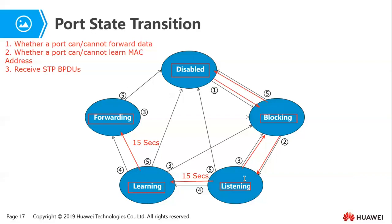The purpose of the 15-second forwarding delay is to ensure that BPDU information has reached all switches within the network before a port begins learning or forwarding data.